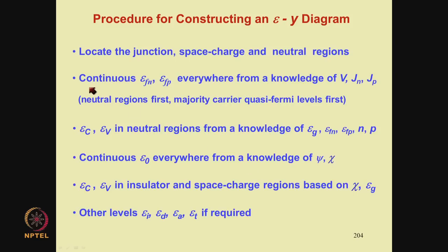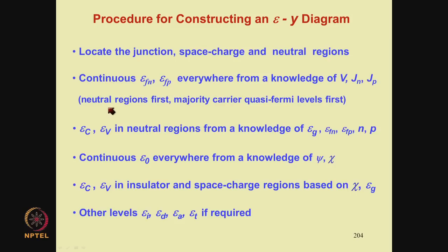The next step is to draw EFn and EFP continuously everywhere from a knowledge of applied voltage across the junction V and current densities of electrons and holes. The gradient of EFn represents the current density Jn and the gradient of EFP represents the current density Jp. Whenever we have options, we should first draw EFn and EFP in the neutral region. Among EFn and EFP, we should first sketch the majority carrier quasi-Fermi level, EFP. This order is dictated by the ease with which we can draw the Fermi levels.